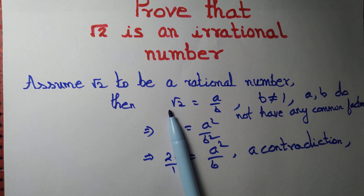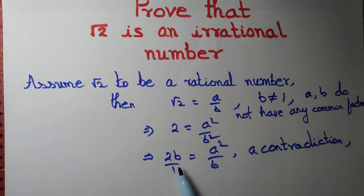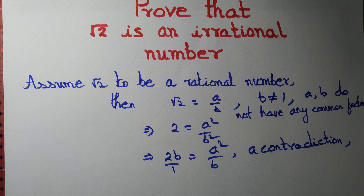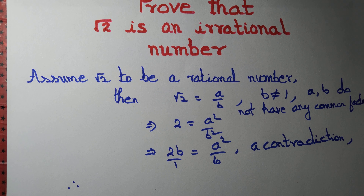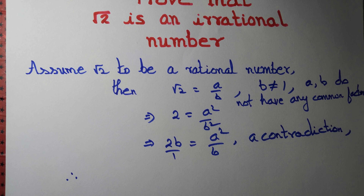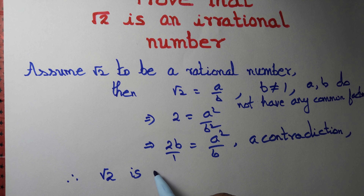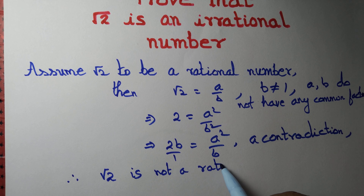We are getting this contradiction because we assumed √2 to be a rational number equal to a/b, and then multiplying by b gives 2b = a²/b, which is impossible. Since we assumed something that led to an impossible result, therefore √2 is not a rational number.